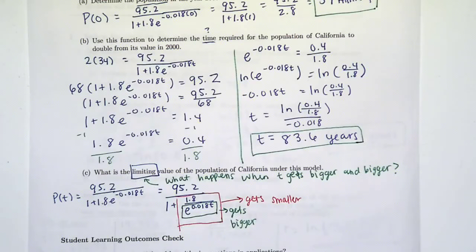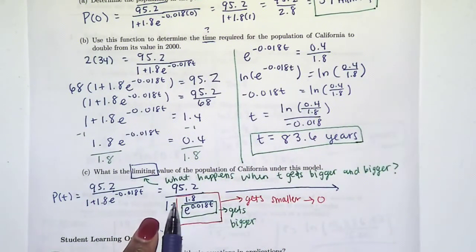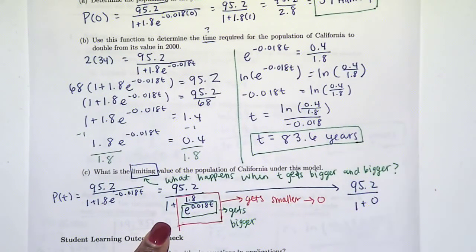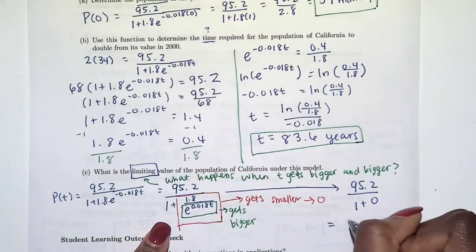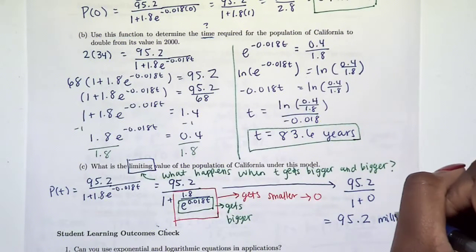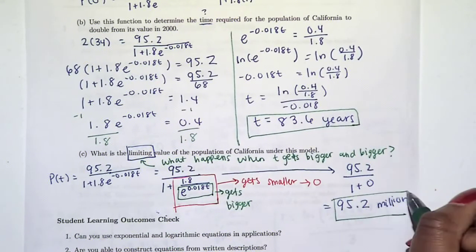And in fact it actually goes to zero. So what happens here? We have 95.2 over 1 plus this fraction. This whole fraction is going to go to zero. That means we have 95.2 divided by 1 plus zero, which is going to go to 95.2 million. So that's as big as our population in California could get under this model.